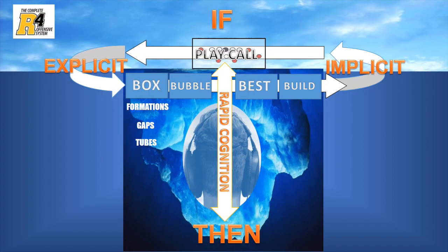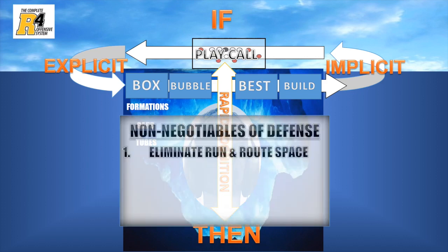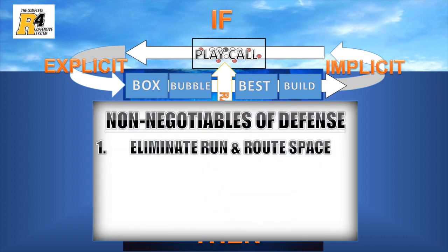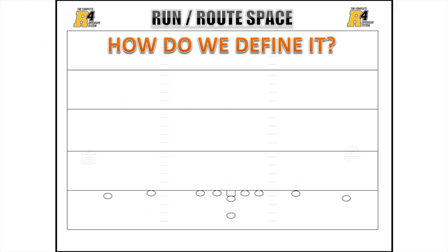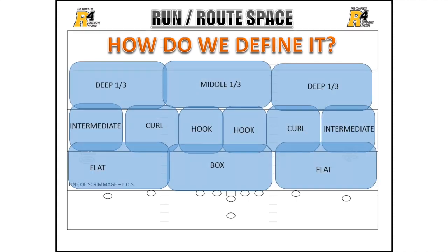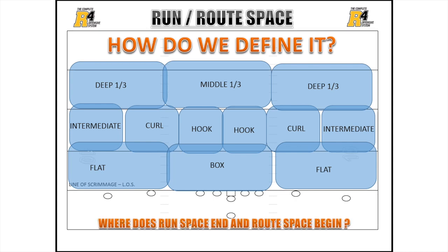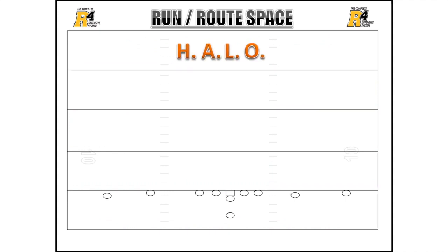Now that we have covered how formations dictate run and route space presented to the defense, we need a deeper understanding of how to locate the position of defenders to understand the space they intend to cap. How can we better define space? Traditional football teaching loosely defines space, but without clear frames of reference, one coach's definition of space may differ from another's. In the absence of clear communication, how can we know where run space ends and route space begins — or clearly communicate positions of defenders without clear boundaries? This predicament was solved by creating the HALO.